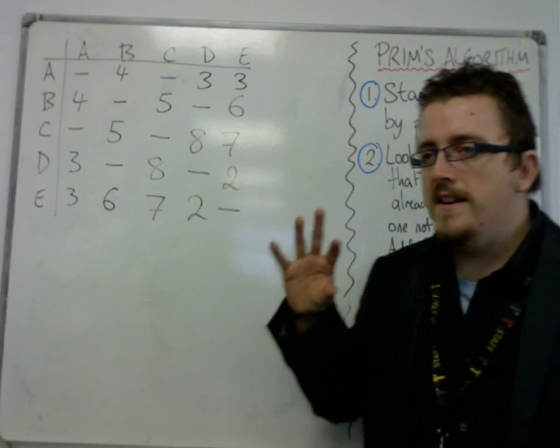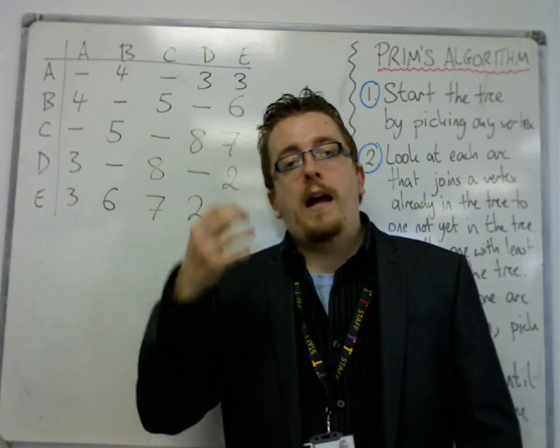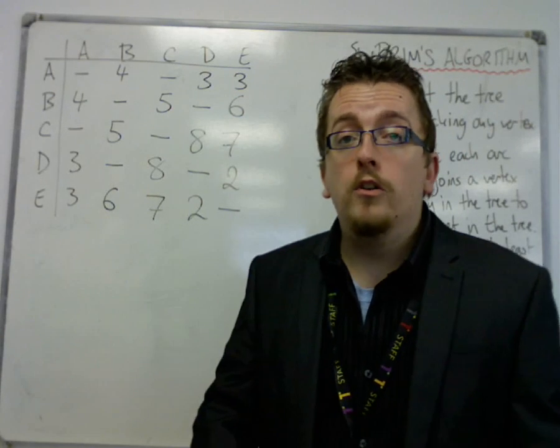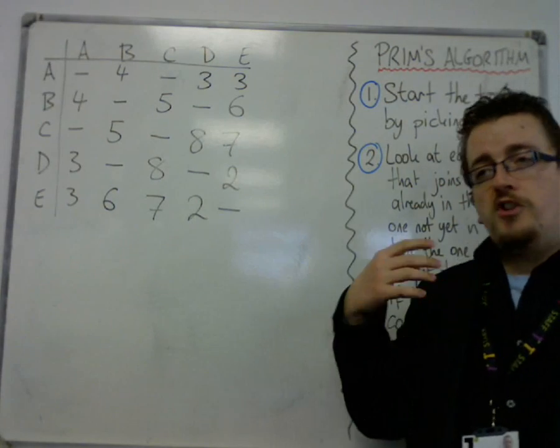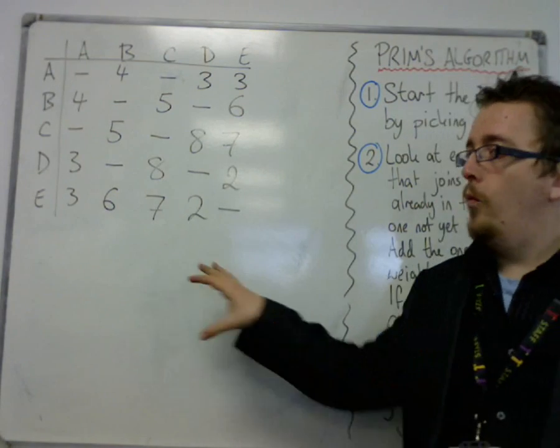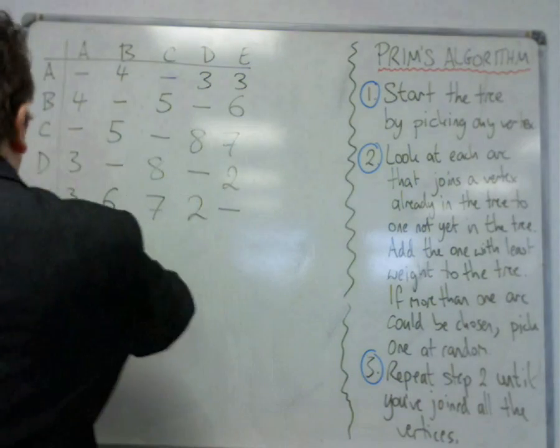So here is a network that is represented as a matrix, and we can be asked to use Prim's algorithm straight from the matrix if required. Just to make sure that you understand exactly what this matrix is showing us, or this array.